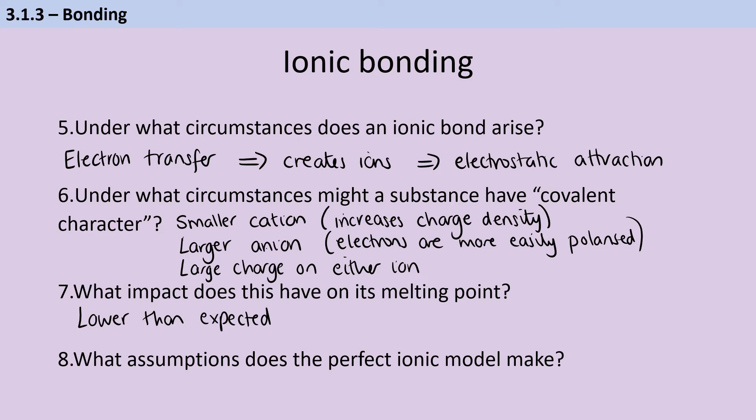Now, the perfect ionic model makes a few assumptions. Firstly, it says that we have point charges. So in other words, these ions don't take up any space at all. They're just a single point in space. Also, we expect that these ions are perfectly spherical, so they're completely uniform, and the electrons are equally distributed all over the sphere. And finally, we have none of that covalent character that we've just described in question six.